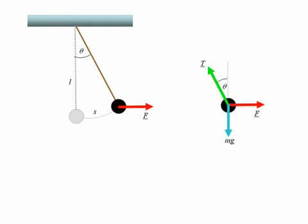So what we want to determine is the work done by the force F in displacing the bob through an angle theta. In order to be able to do this calculation, we need to know how F varies with the angle theta.